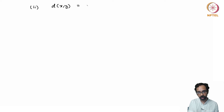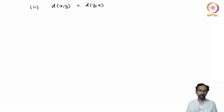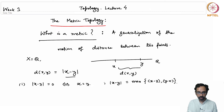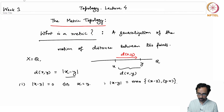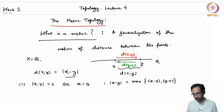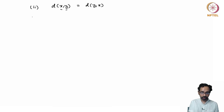The second property is that the distance between x and y is the same as the distance between y and x. If you change the order of the two points, you should get the same result. If you travel from x to y you travel distance d(x,y), and if you travel back from y to x you travel distance d(y,x), and of course they should be the same amount. So d(x,y) = d(y,x).